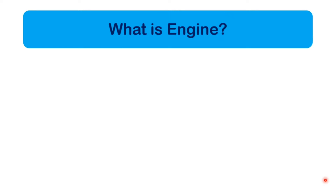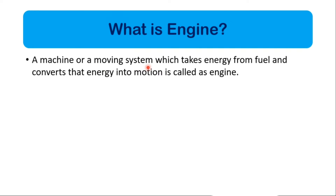Hello everyone, welcome to my channel. In this video we will study about automobile engines. An engine is a machine or a moving system which takes energy from fuel and converts that energy into motion. Basically, an engine is a device which transforms or converts chemical energy from fuel into thermal energy and uses that energy to produce mechanical work or to move the vehicle.